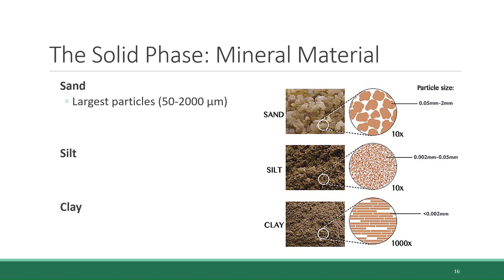Silt is mid-range in size, 2 to 50 micrometers. And clay is the smallest of the three. Clay particles are less than 2 micrometers, which is about the diameter of a single bacterium. So very, very small.